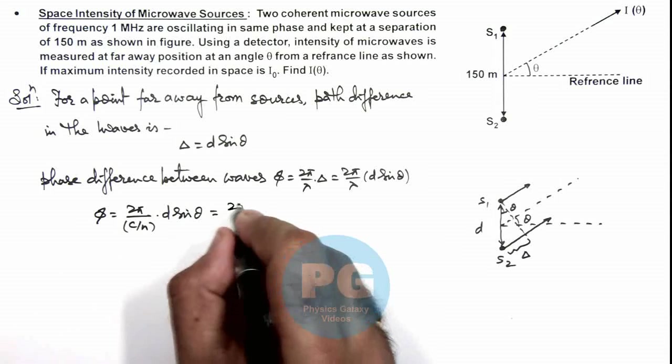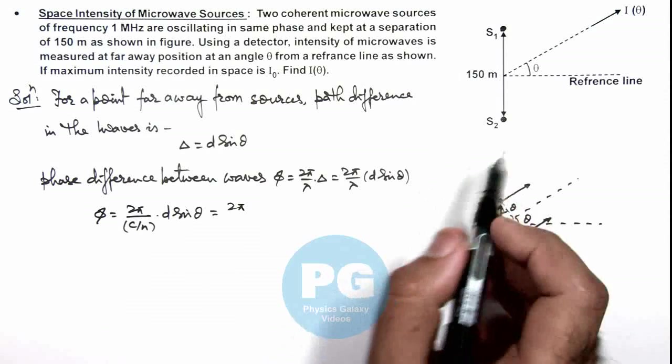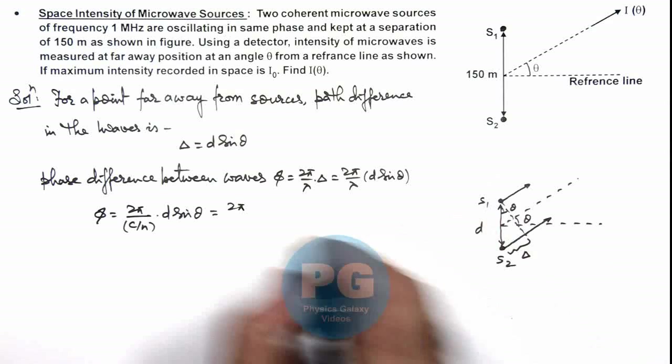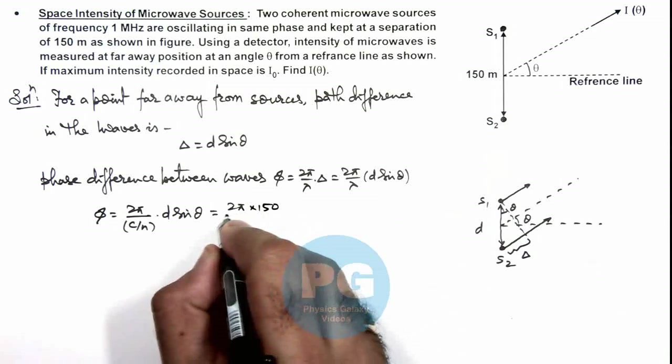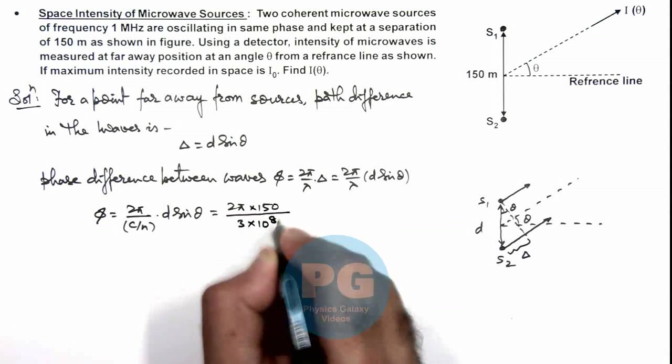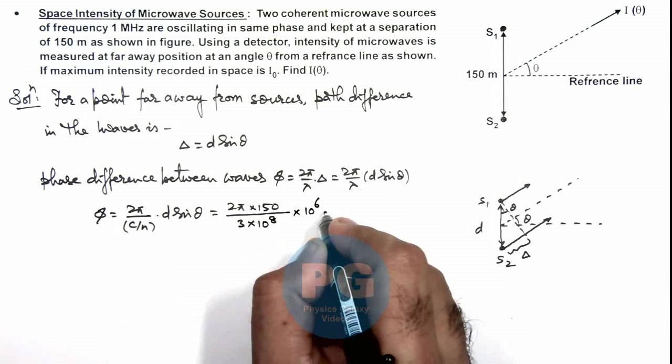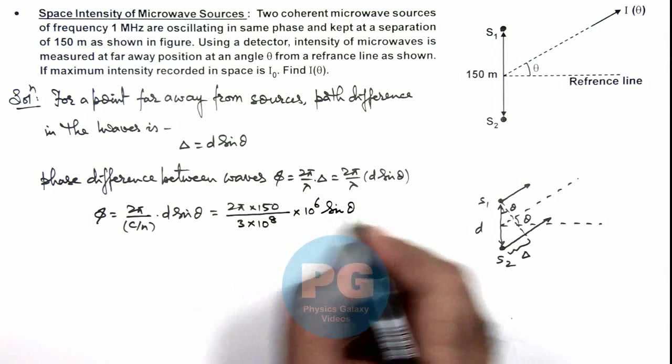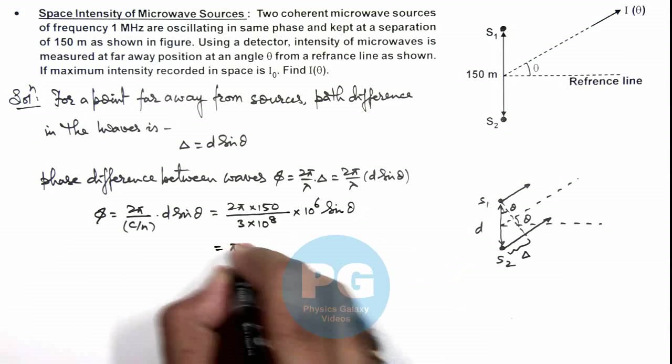So this is 2π, the value of d given here is 150 meters. So this is 2π × 150 divided by c/ν, c is 3×10⁸, ν is 10⁶ multiplied by sin theta. So if you numerically solve it, this is simply giving us π sin theta.